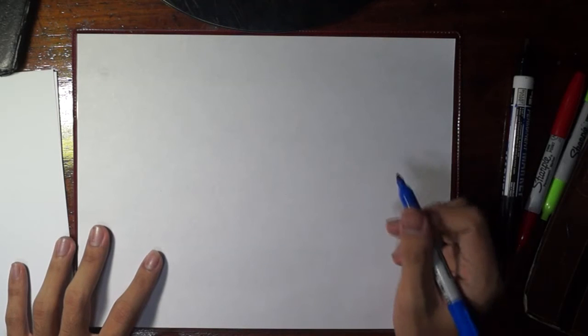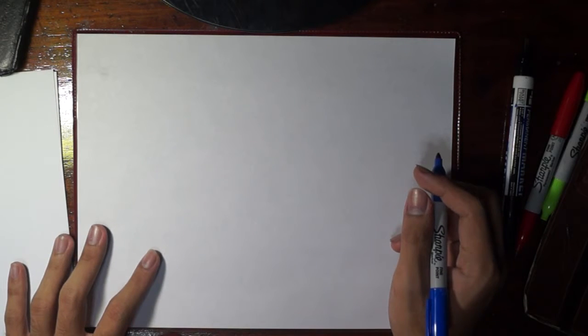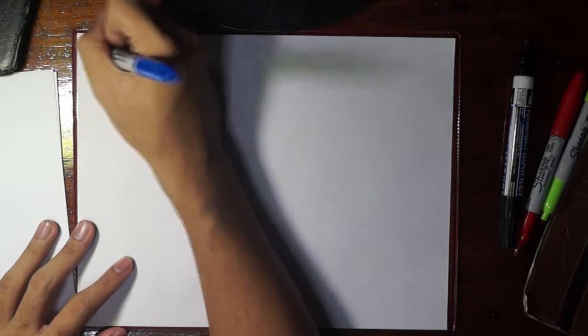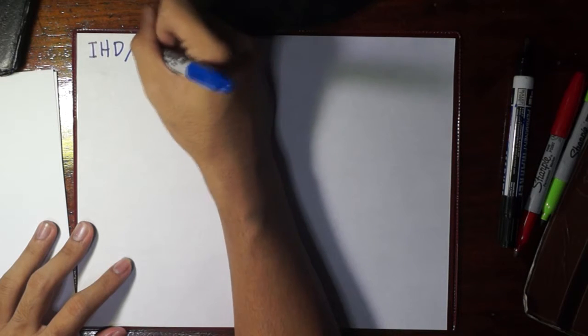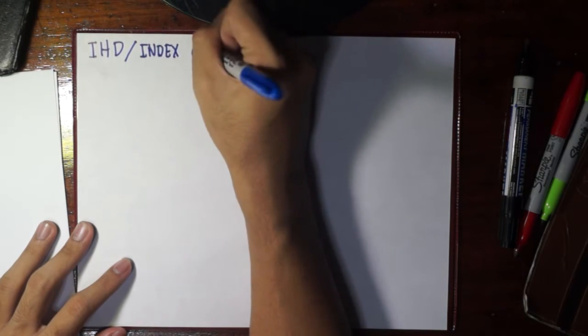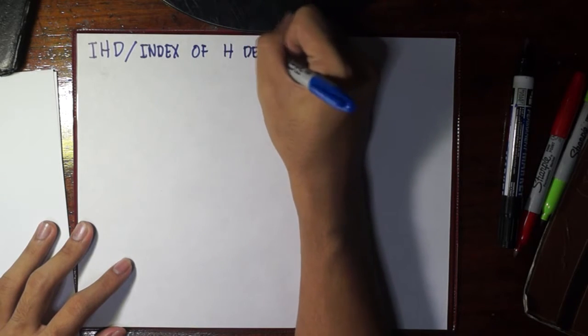Before we proceed to the reactions of alkenes and alkynes, sometimes you are given questions like in your seat works or quizzes wherein they give a certain molecular formula and then they try to ask you what's the possible structure of this. If we're talking about hydrocarbons, it is possible for us to know that. But how? We use a certain value and we call this the IHD or the Index of Hydrogen Deficiency.